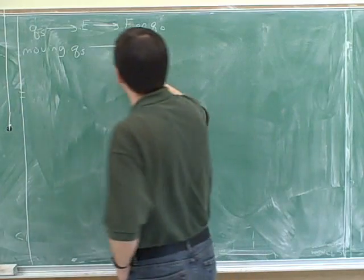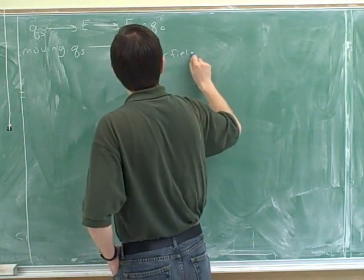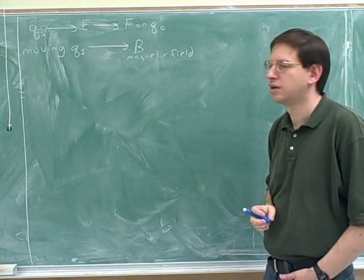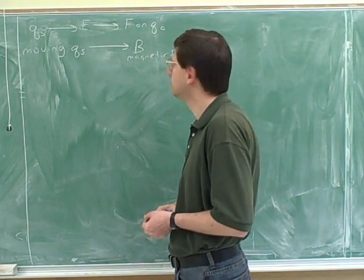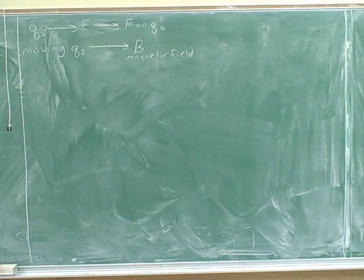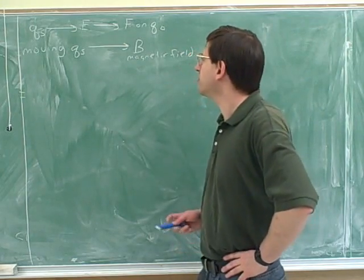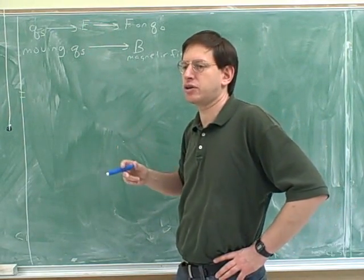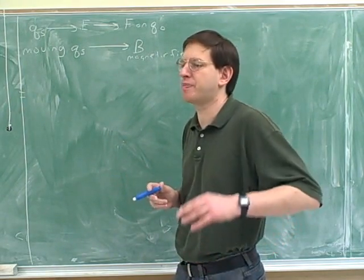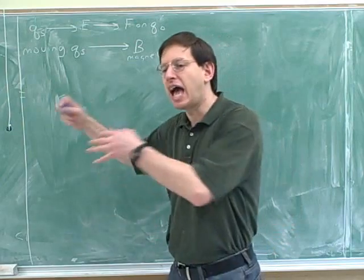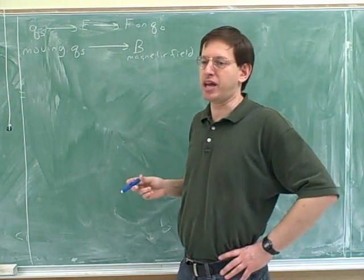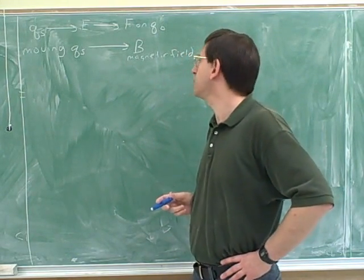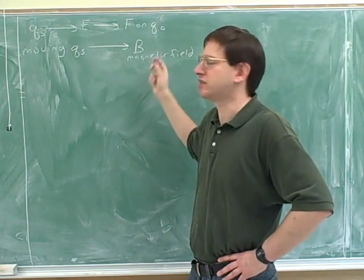That's a very standard symbol. Now remember that we would never talk about the electric field that is exerted on a charge, because electric fields are not exerted on charges — electric fields are properties of space. We would talk about the electric field at a point in space. The same thing goes for a magnetic field. The magnetic field at a point in space has nothing to do with any charges that might be there. It's just a property of the space.